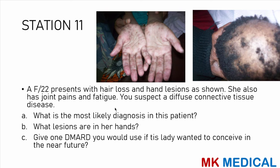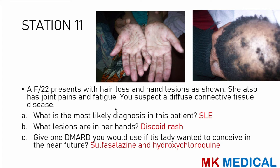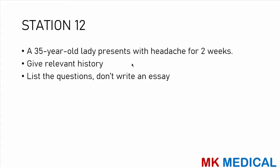Station 11: a female, 22, presents with hair loss and hand lesions. She also has joint pains and fatigue, and you suspect a diffuse connective tissue disease. Most likely this woman has systemic lupus erythematosus (SLE). The lesions on her hands are roundish — more or less a discoid type of rash, though smaller than typical discoid rash. One DMARD she could use if wanting to conceive: sulfasalazine or hydroxychloroquine — these are not contraindicated in pregnancy, unlike methotrexate.